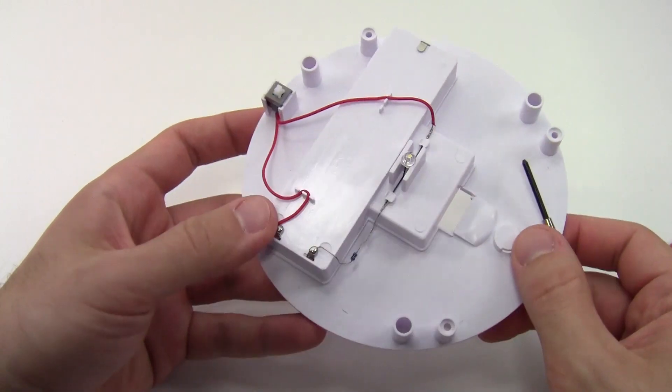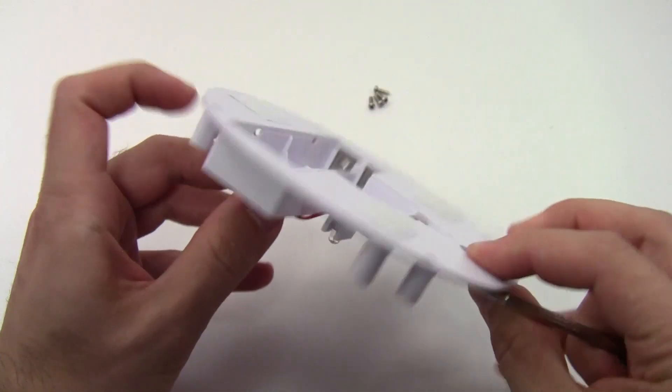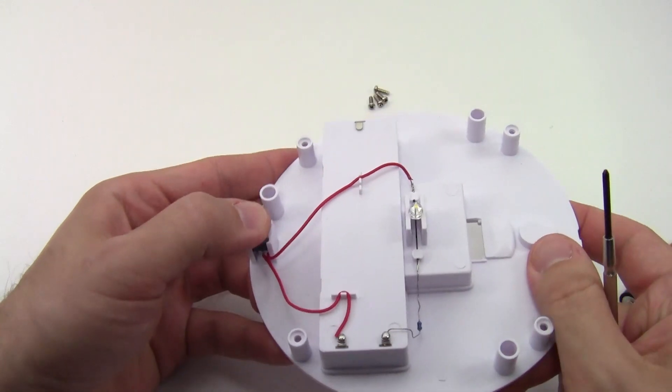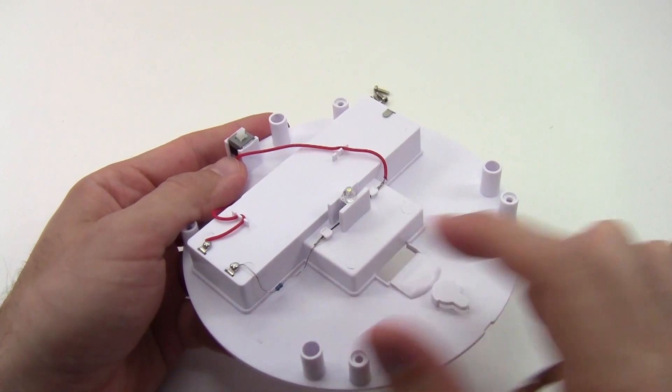Let's look at what we have going on inside. I can see I have the terminals that connect to the battery compartment, a push switch, an LED and a resistor.